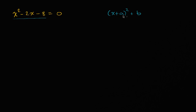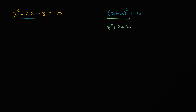Let's remind ourselves how we need to rearrange the left-hand side to get to this form. If I were to expand out x plus A squared, that is x squared plus 2Ax plus A squared, and of course you still have that plus B there.